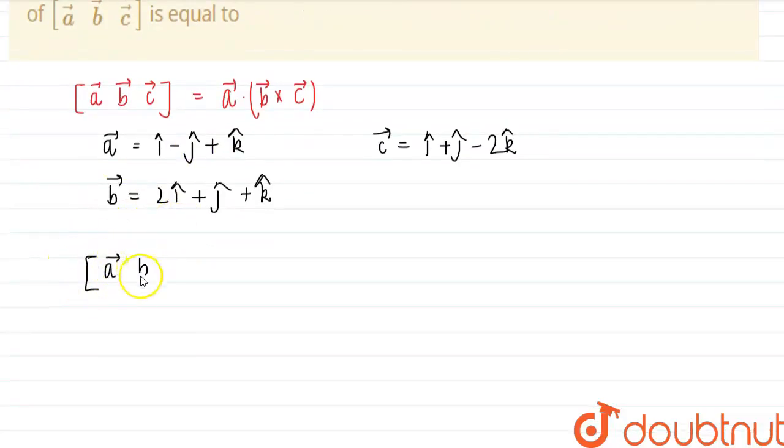So we can now find the scalar triple product, that is a, b, c, which is equal to the determinant formed by the coefficients. That is 1, minus 1, and 1 for the first. Now b, this is 2, 1, and 1. And the third one is 1, 1, and minus 2.